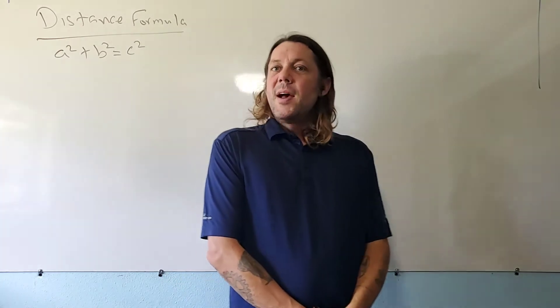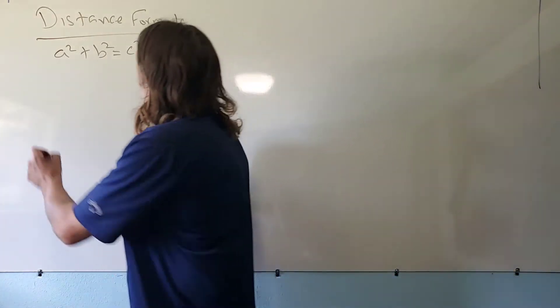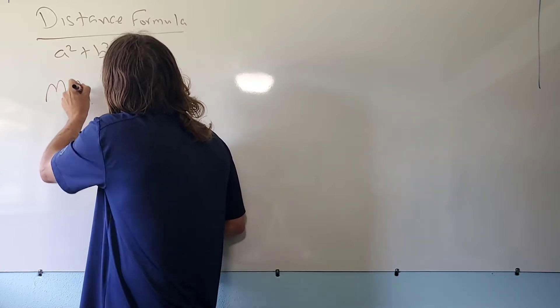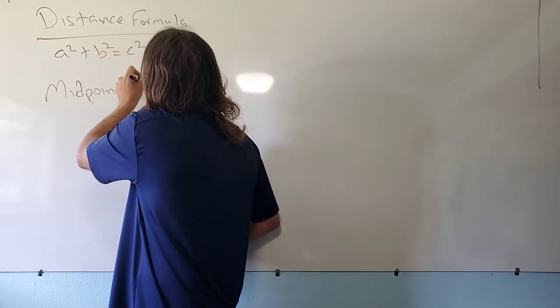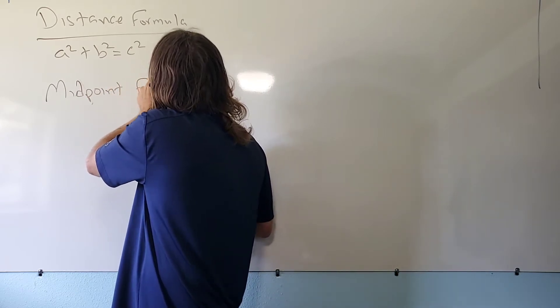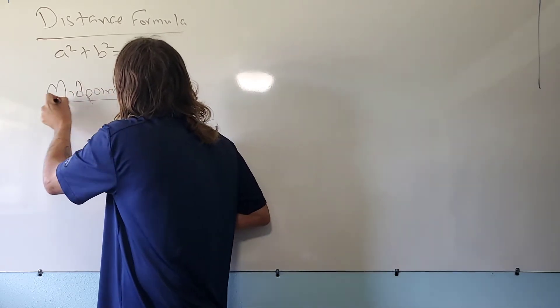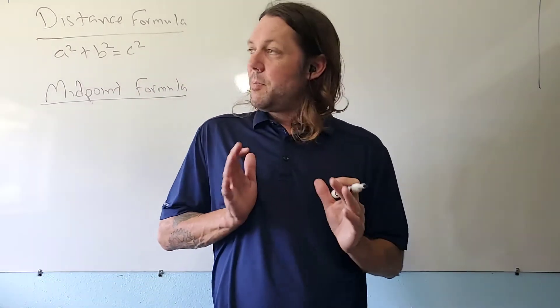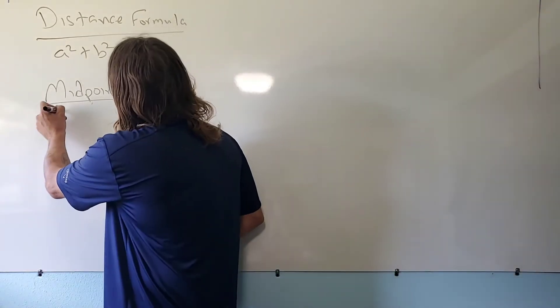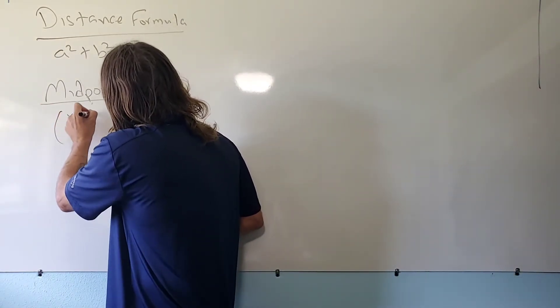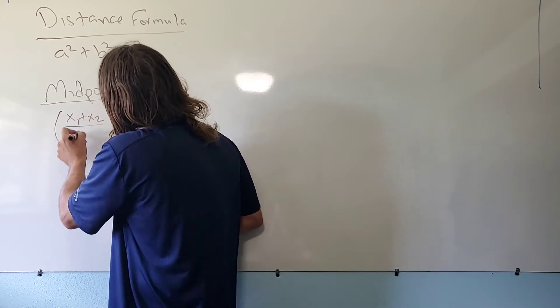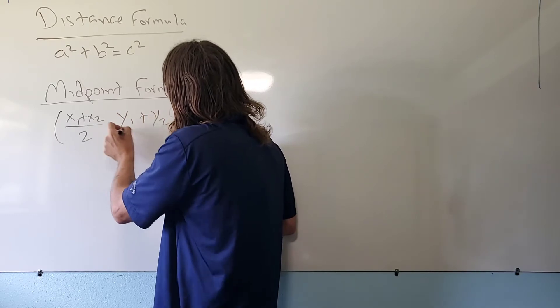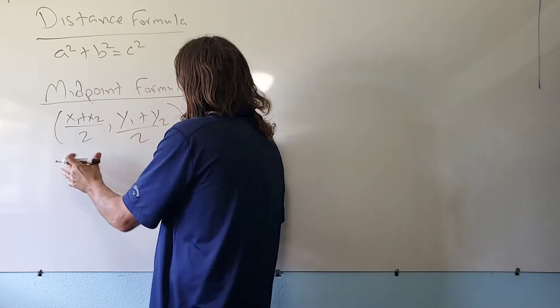The other formula that we're going to use is the midpoint formula. With the midpoint formula, we're finding an ordered pair. So we add together our x values and then we divide that by two. We add together our y values and then we divide that by two. Again, it's an ordered pair.